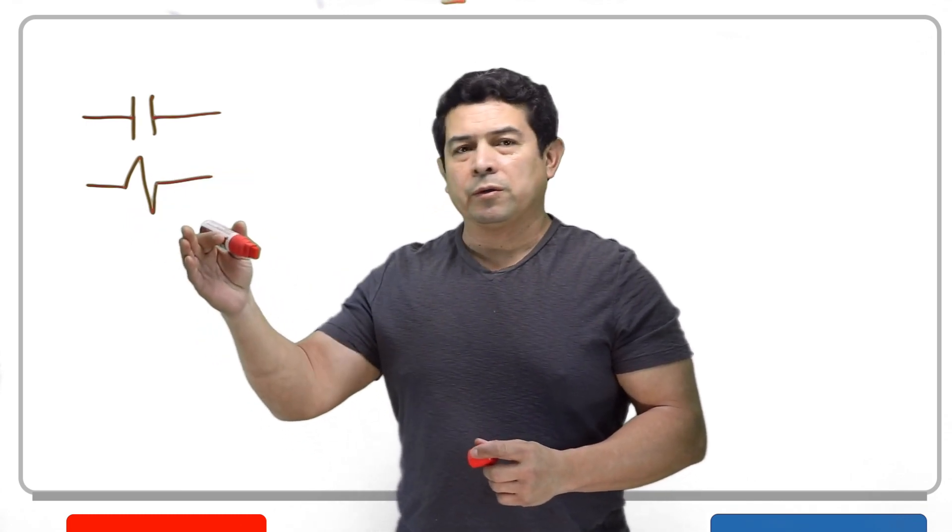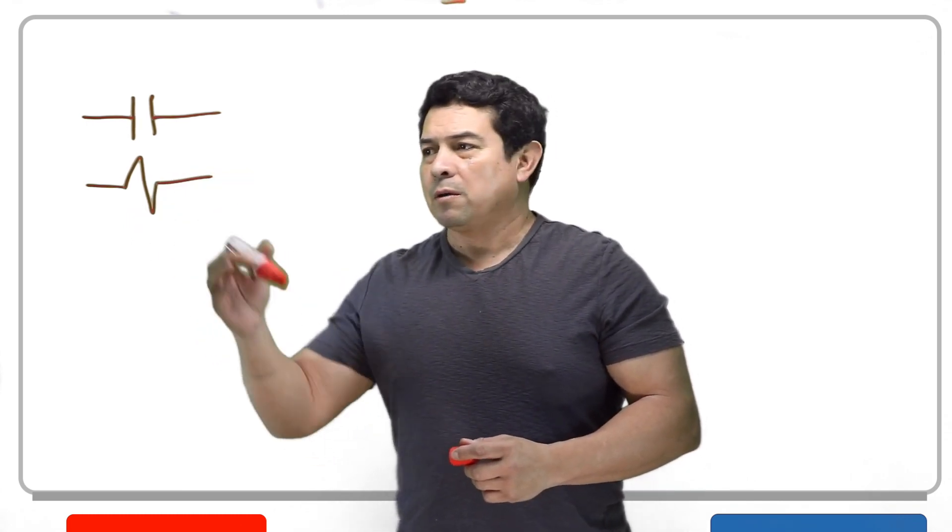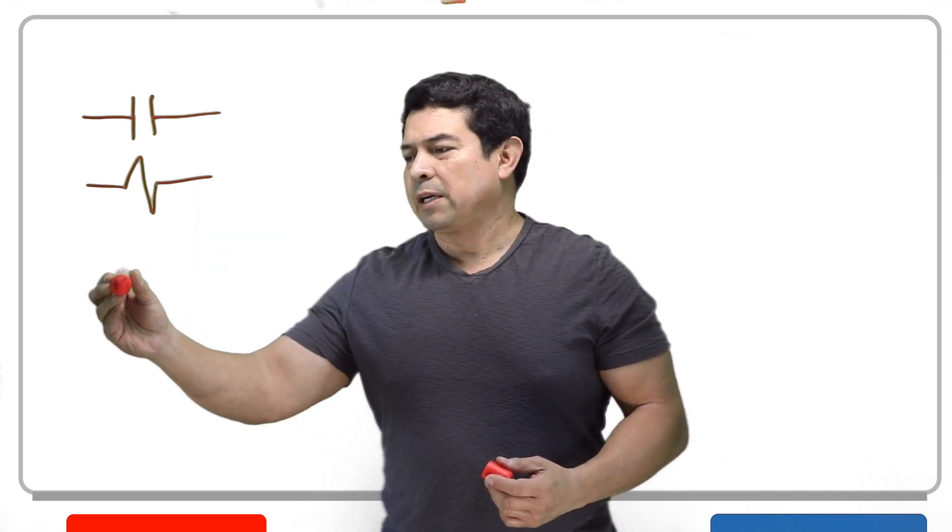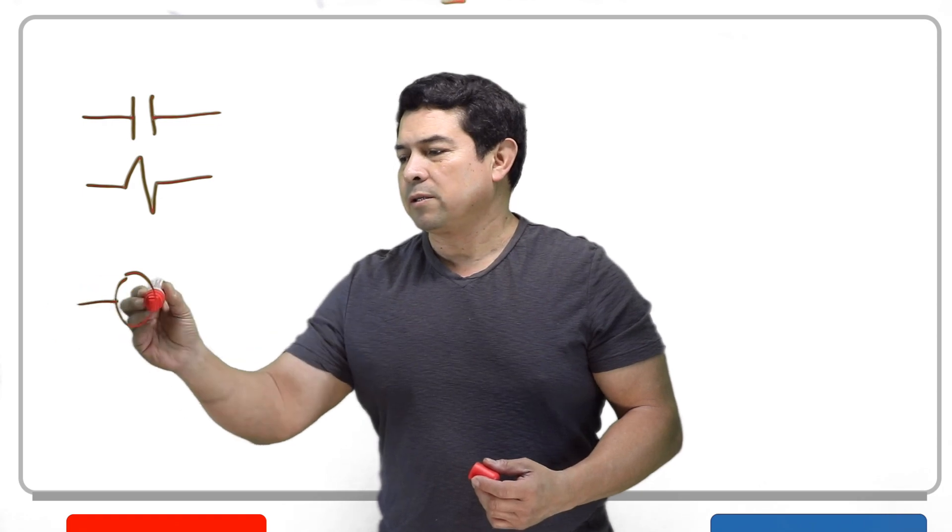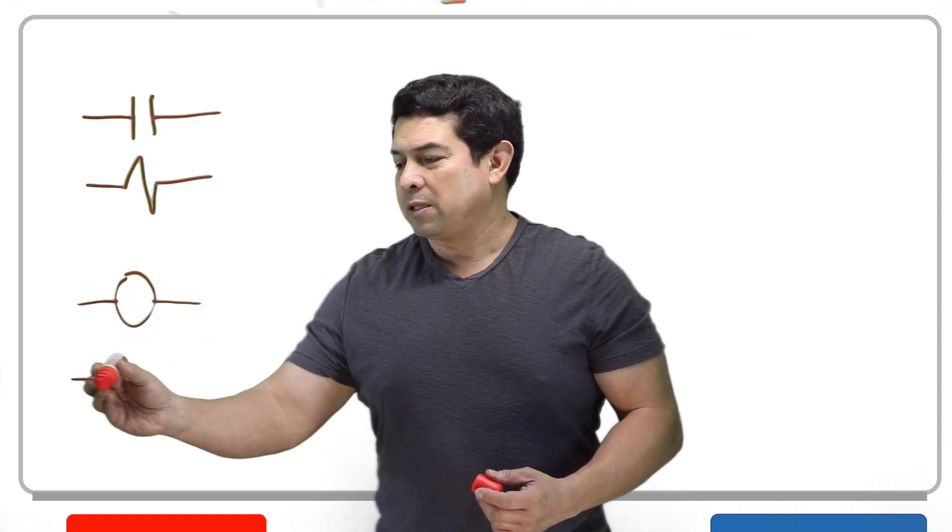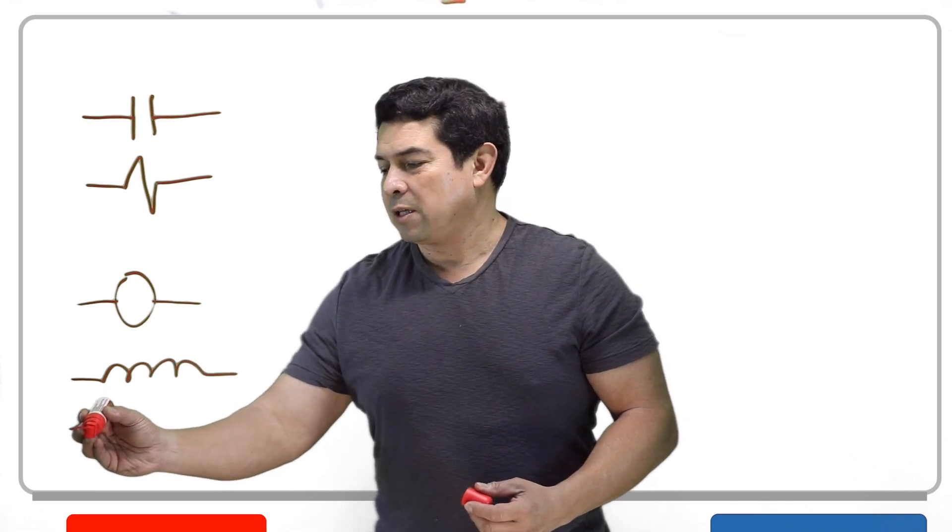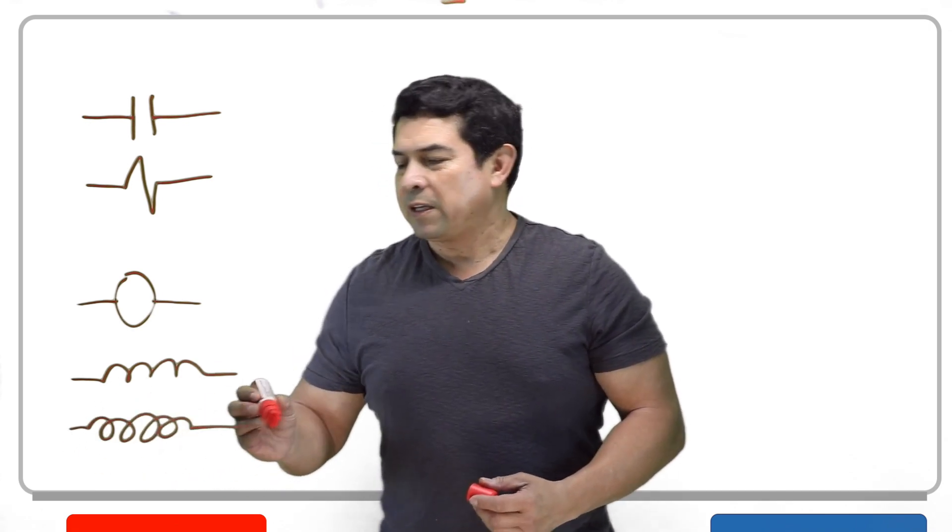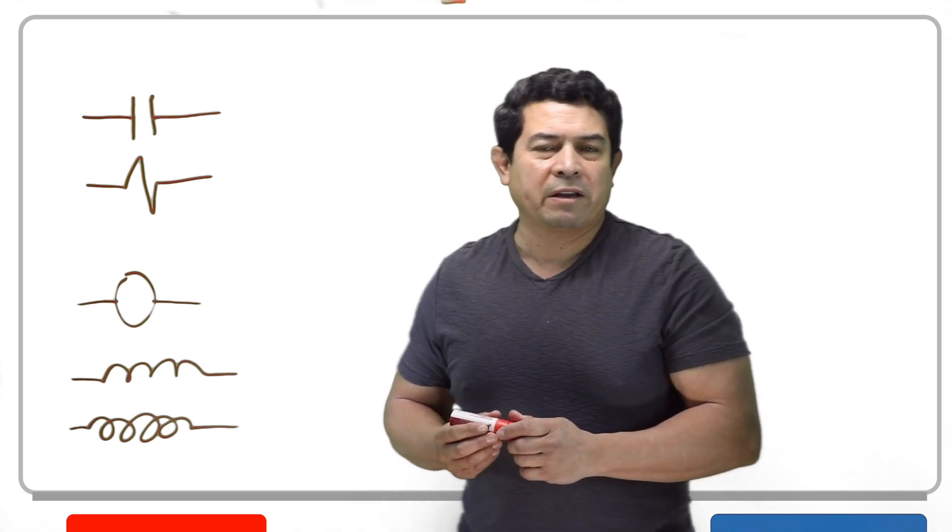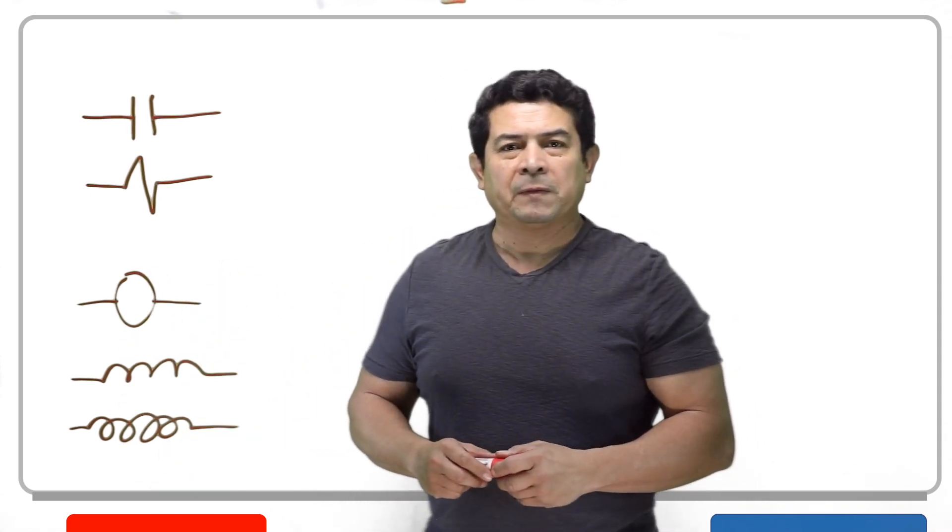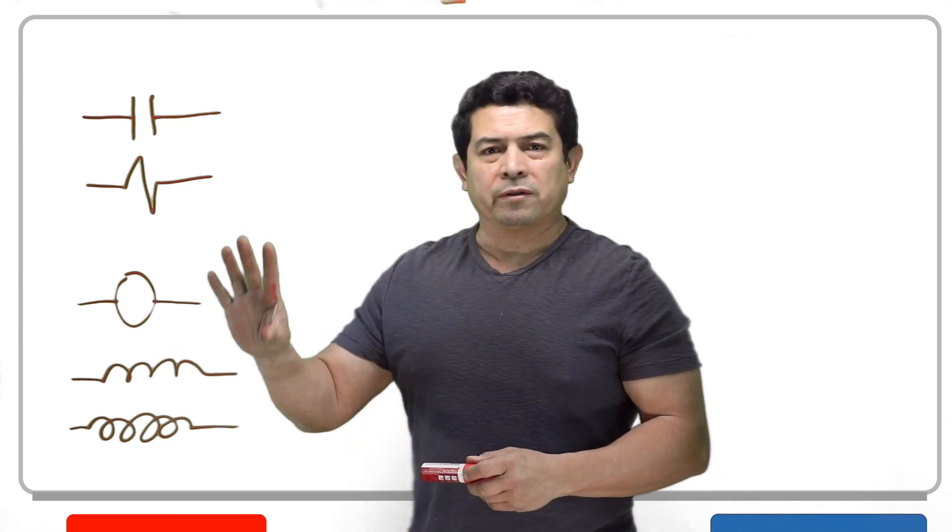Now this coil is going to generate a magnetic field. A lot of times this is how you see the coil drawn. Sometimes you may just see a circle like this. Sometimes you may see that it's like this. It just depends on the manufacturer or the person, whoever is doing the schematic for it, that is going to show you different coils.